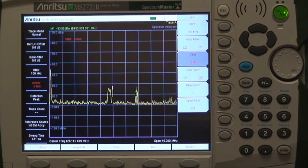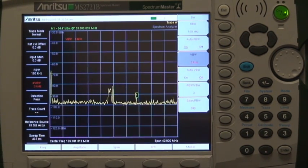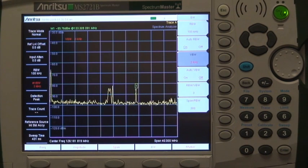This measurement was made using a narrow video bandwidth to clean up noise variations on the trace. Notice that the small signal at the marker position is easily seen with the narrow video bandwidth and the sweep takes about 431 milliseconds.